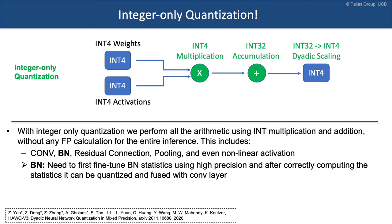The key is the treatment of the batch normalization layer. A lot of prior work in quantization keeps batch norm parameters in floating point precision because batch norm is very sensitive. The work from Google doing integer-only quantization didn't treat batch norm in the most optimal way.